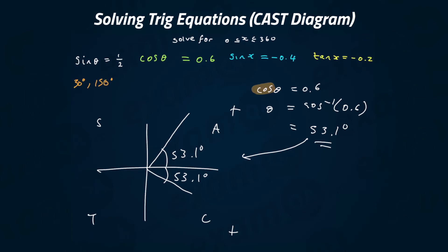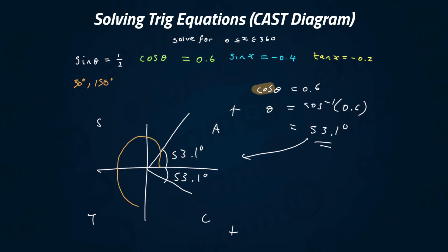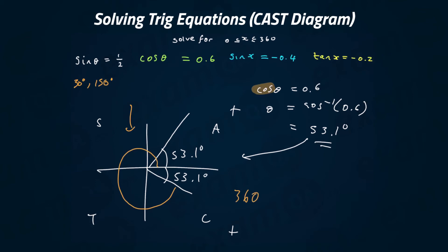Now I work out the second value. The first value was 53.1 degrees. For the second, we measure anti-clockwise from the positive x-axis — we've gone a full 360 but went back 53.1 degrees. So that is 360 minus 53.1, which is 306.9 degrees. That is our second answer.